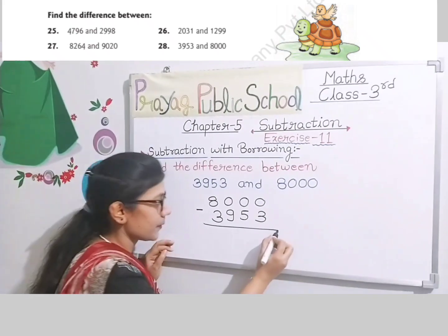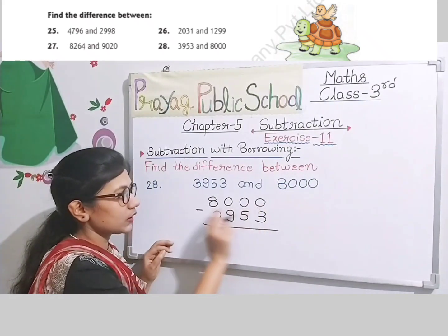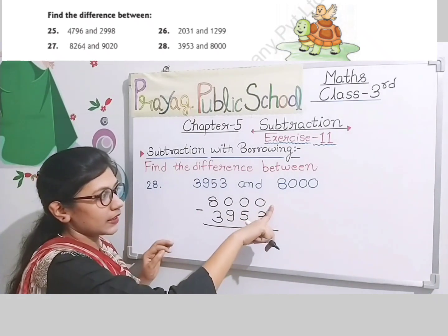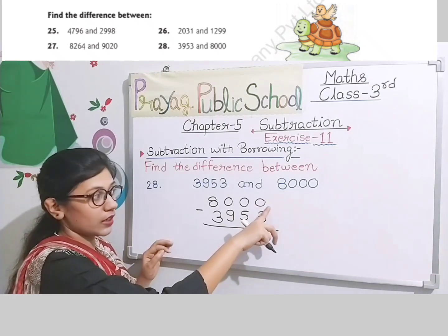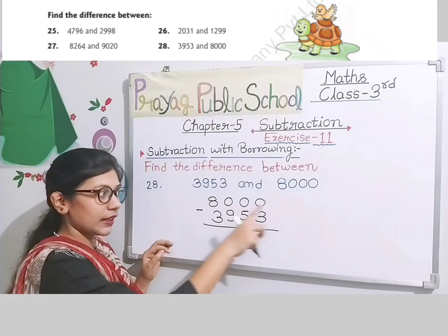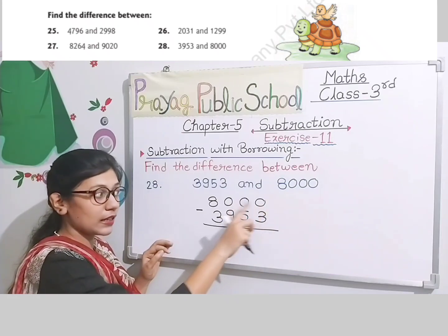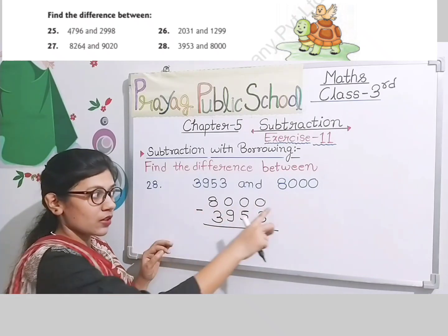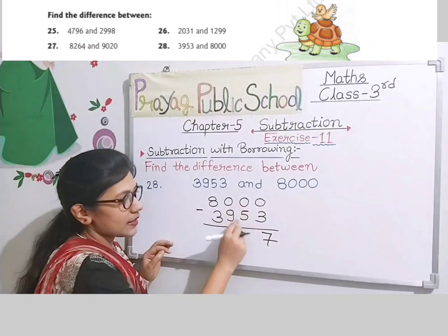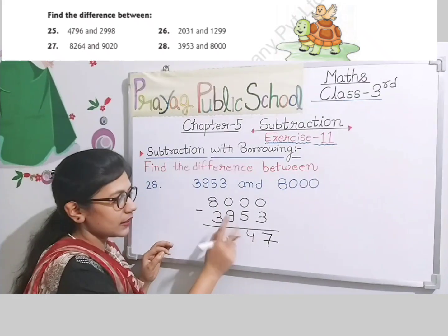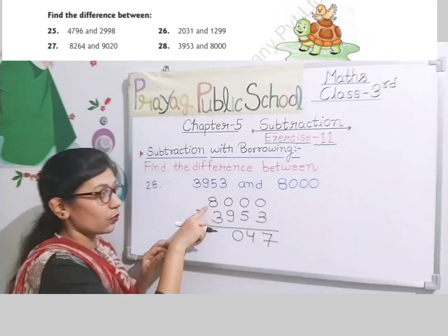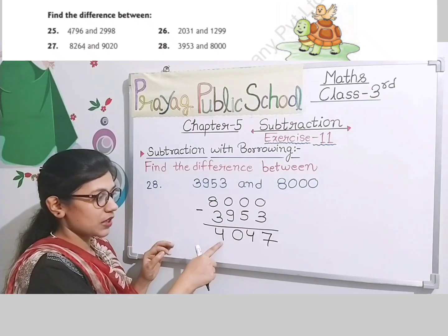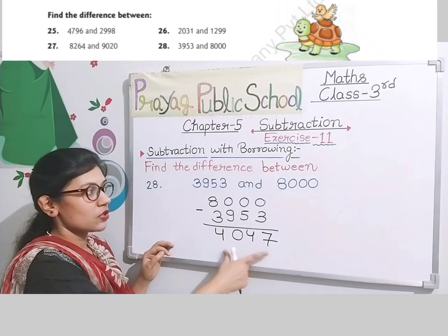Difference find out karna hai — subtract karna hai. Jab sara zero ho to yahan se borrow lenge. Right-hand side ke zero ko ten denge — this is ten. Baaki zeros nine rahenge: ten, nine, nine, nine. 10 minus 3 we get 7, 9 minus 5 we get 4, 9 minus 9 we get 0. Yahaan isne one time borrow diya — 7 ho gaya. 7 minus 3 we get 4. The answer is four thousand forty-seven.